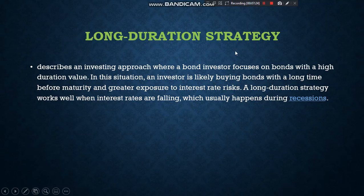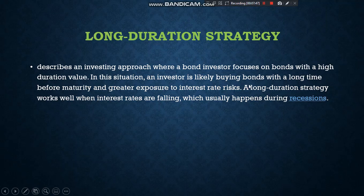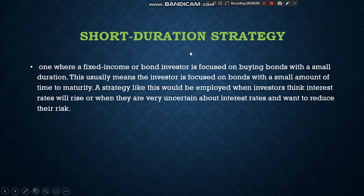We have two types of strategies: Long Duration Strategy and Short Duration Strategy. Long Duration Strategy is applied by investors who believe interest rates will fall — they focus on bonds with high duration values, typically with long time to maturity and greater interest rate risk exposure. This strategy works well when interest rates are falling, especially during recessions. Short Duration Strategy is used when investors expect interest rates to increase — since rising rates decrease bond prices, businesses apply short duration strategy to minimize the decrease in their bond's price.